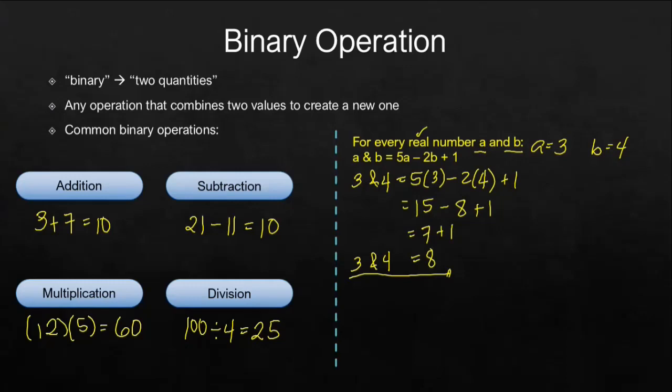Next, we have a new binary operation represented by this hashtag. a hashtag b is defined by a squared plus b. So let's use a different value. Let's choose a different real number for a. Say, for example, a is 1 half, and then b, let's say this is negative 2.